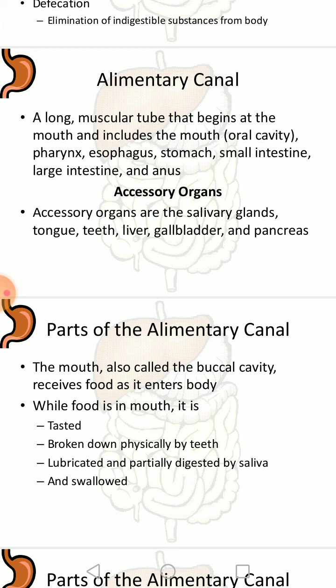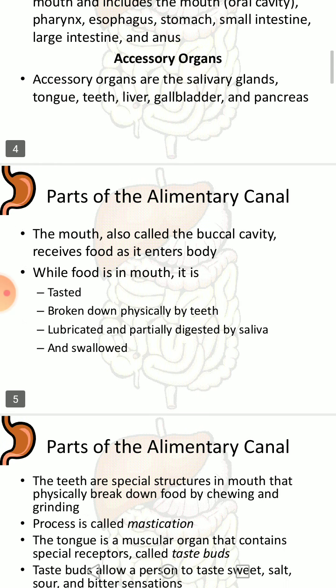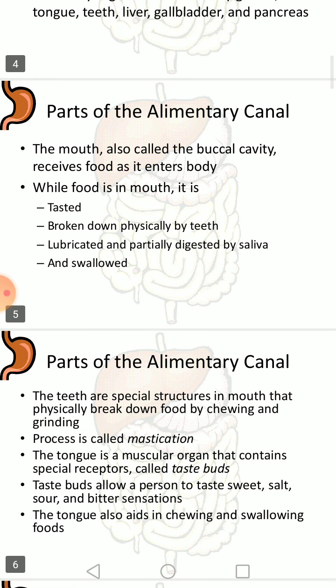The alimentary canal is a long muscular tube that begins from the mouth and includes the pharynx, esophagus, stomach, small intestine, large intestine, and anus. Accessory organs or accessory glands include the salivary glands, tongue, teeth, liver, gallbladder, and pancreas.